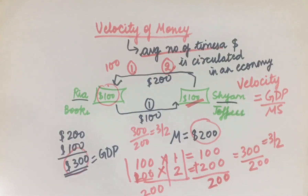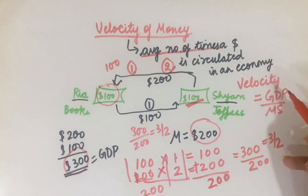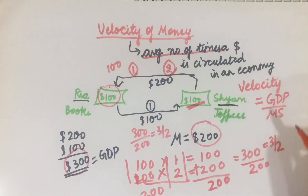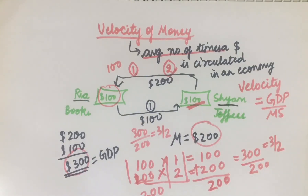Because the economy is very big, the intuitive averaging method may not always be practical, so we use the formula Velocity = GDP divided by Money Supply, which gives the same answer. Friends, this was the Velocity of Money. If you liked the video, do subscribe to my channel. Thank you, friends.